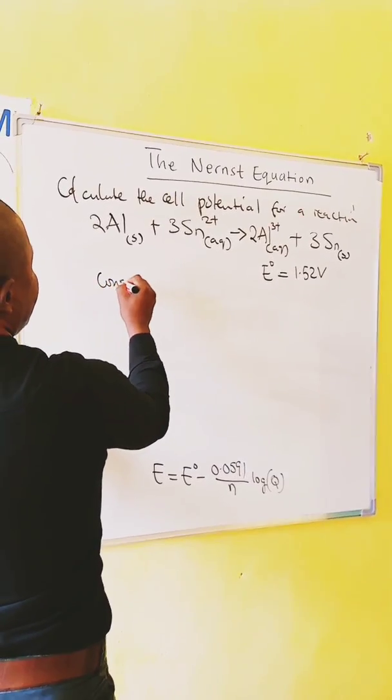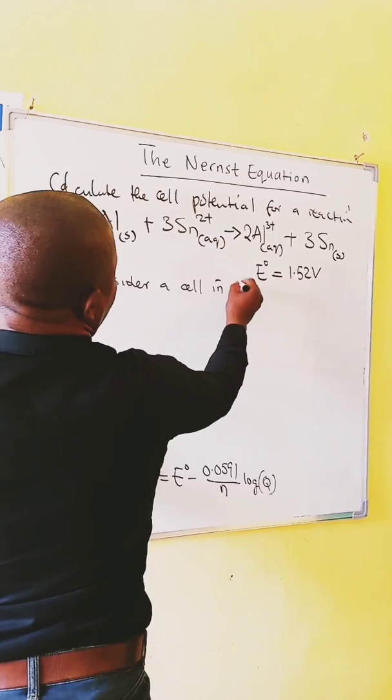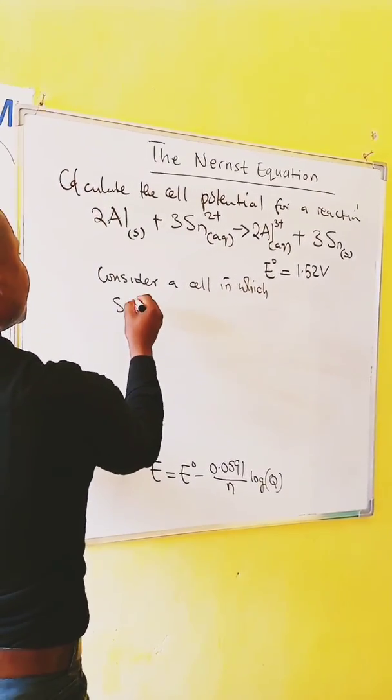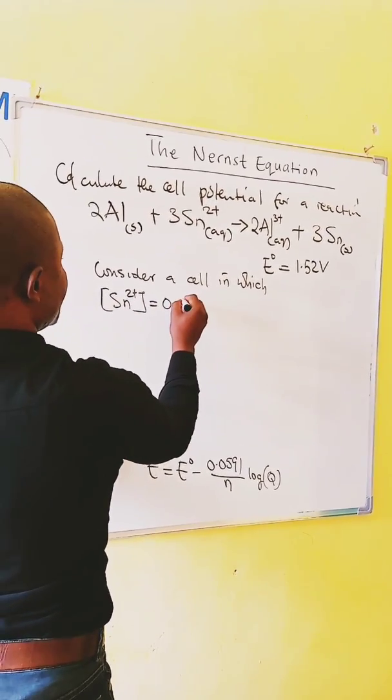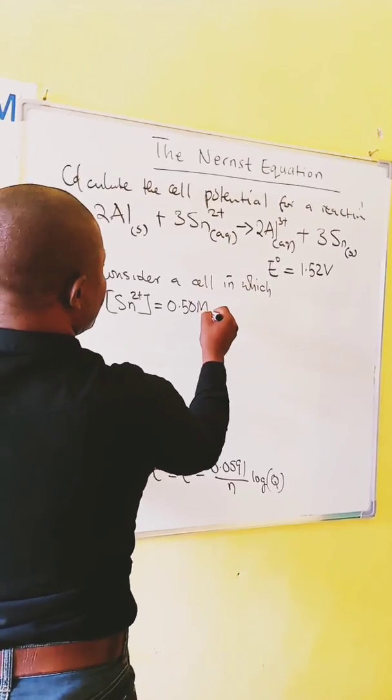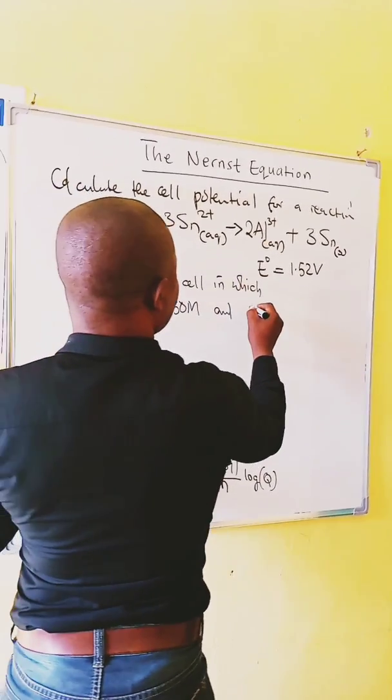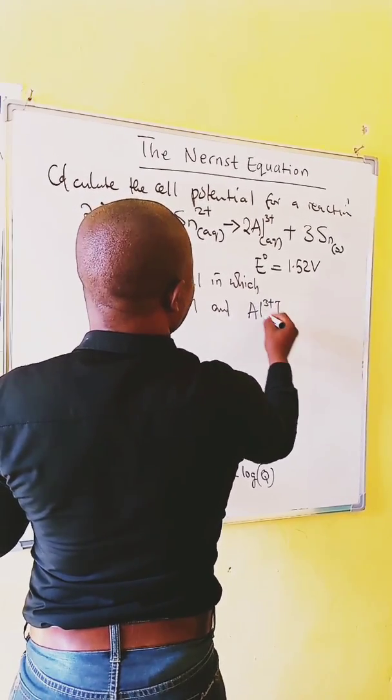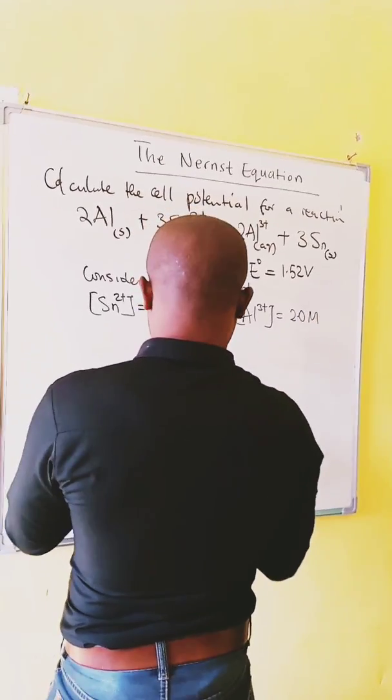Consider a cell in which the concentration of tin ion is equal to 0.50 molar and concentration of aluminum ion is equal to 2.0 molar.